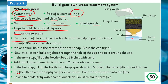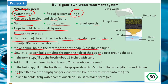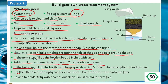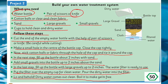Following the steps: cut the end of the empty water bottle with scissors. Make a small hole in the center of the bottle cap and close the cap tightly. Stick a cotton ball or fabric through the hole of the cap and tie it around the cap. Fill the bottle two inches with sand, then add small gravels up to two inches above the sand. Finally, fill the bottle with large gravels up to two inches. The water filter is ready — put it over an empty cup, pour in the dirty water, and the dirty water comes out clean. Boil it to make it germ-free.